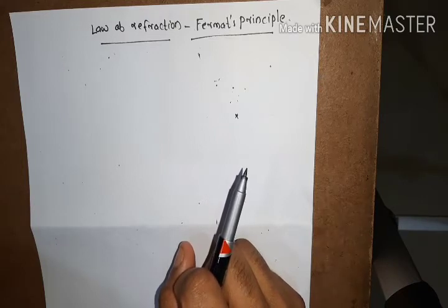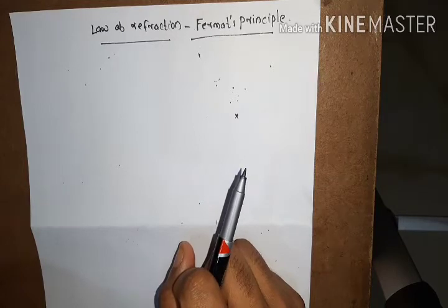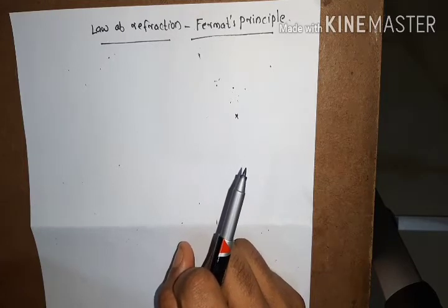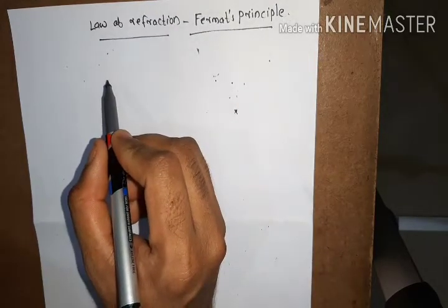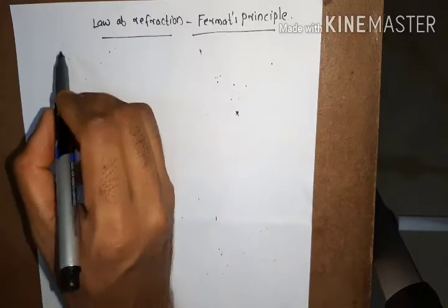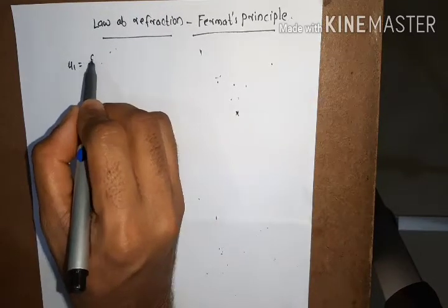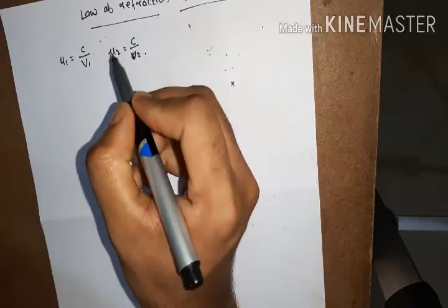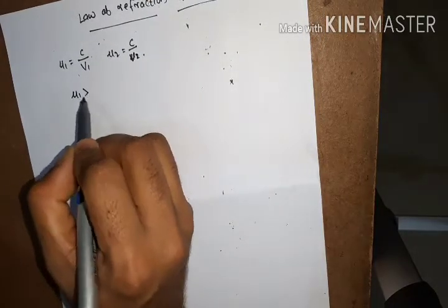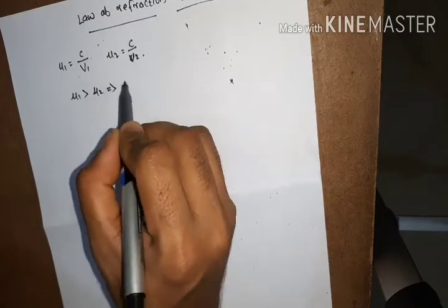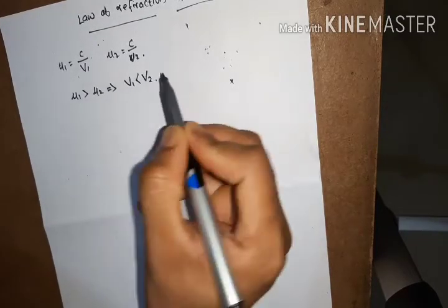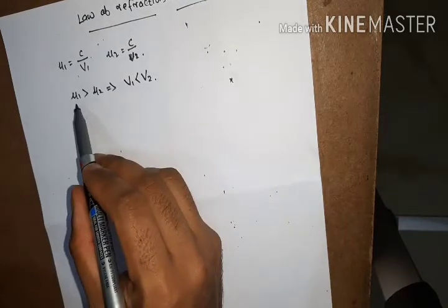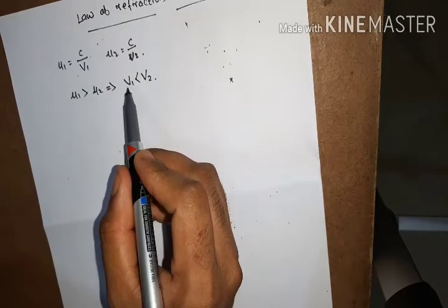This is purely based on the fact that the velocity of light is not constant in all mediums. The refractive index is defined as the velocity of light in vacuum divided by velocity of light in the medium. If the refractive index value is higher, the velocity of light in that medium is lesser. For example, if mu1 = c/v1 and mu2 = c/v2, then if mu1 is greater than mu2, correspondingly v1 should be less than v2.